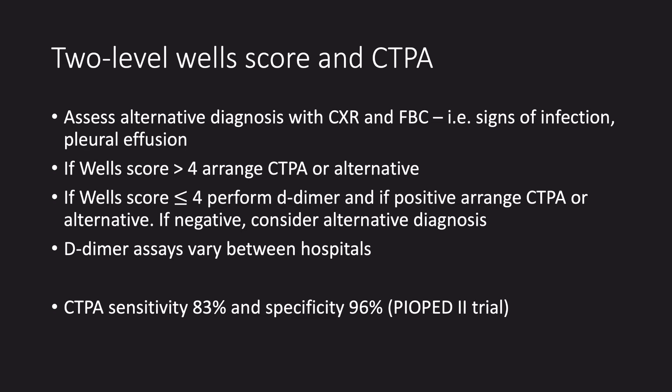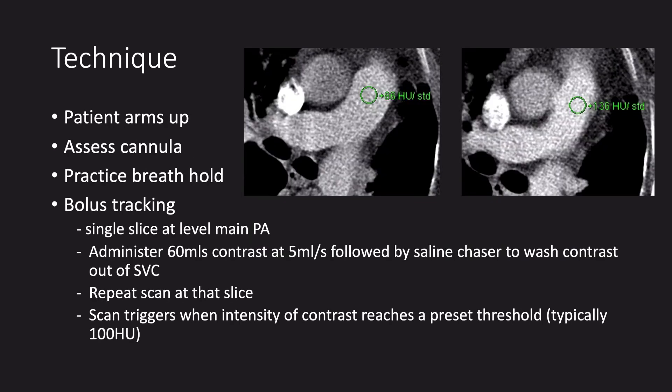We don't scan everyone due to the radiation dose. For the scan, the patient needs to lie with their arms above their head — if their arms are by their side, the scan can be affected by artefact. We assess the cannula to make sure it works and practise a breath hold. We get good opacification in the pulmonary artery by a process called bolus tracking: we scan at a single point at the level of the main pulmonary artery and give the contrast. When the intensity of the contrast hits a certain predetermined point, measured in Hounsfield units, the scan triggers.